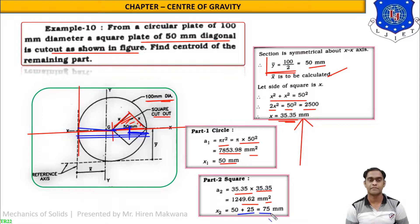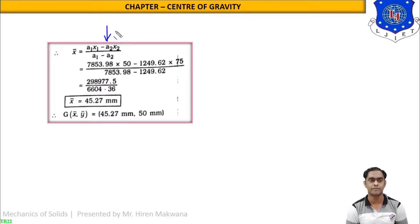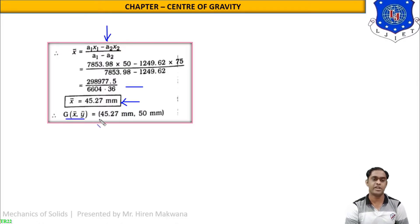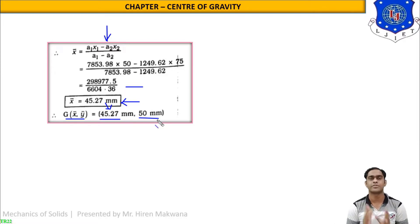By subtracting part 2 from part 1, we calculate the center of gravity. x-bar = (A1·x1 − A2·x2) / (A1 − A2) = (7853.98 × 50 − 1249.62 × 75) / (7853.98 − 1249.62) = 45.27 mm. y-bar was found directly as diameter/2 = 100/2 = 50 mm.